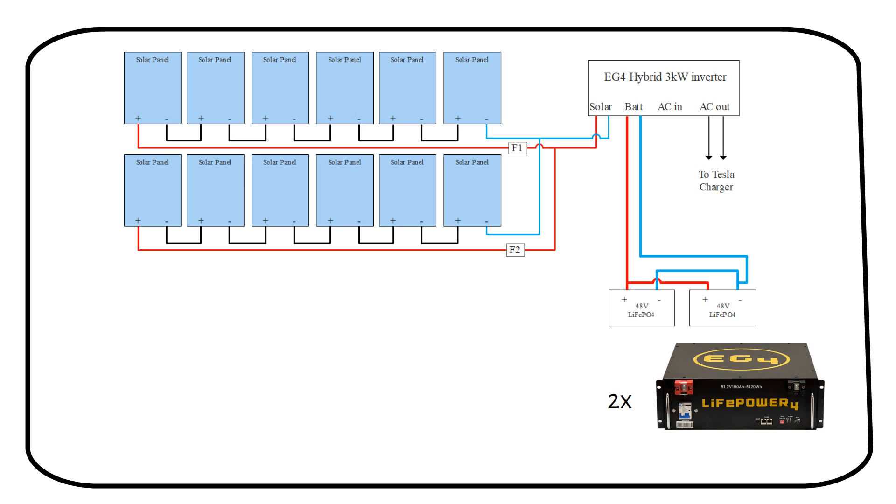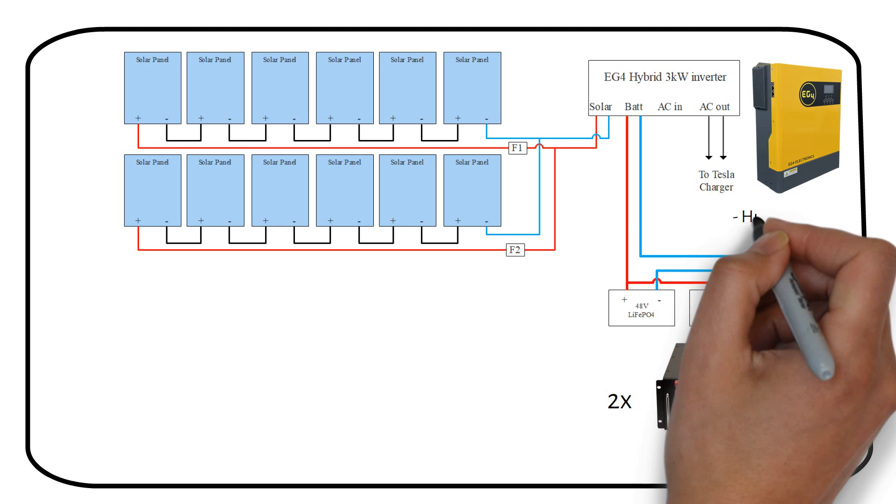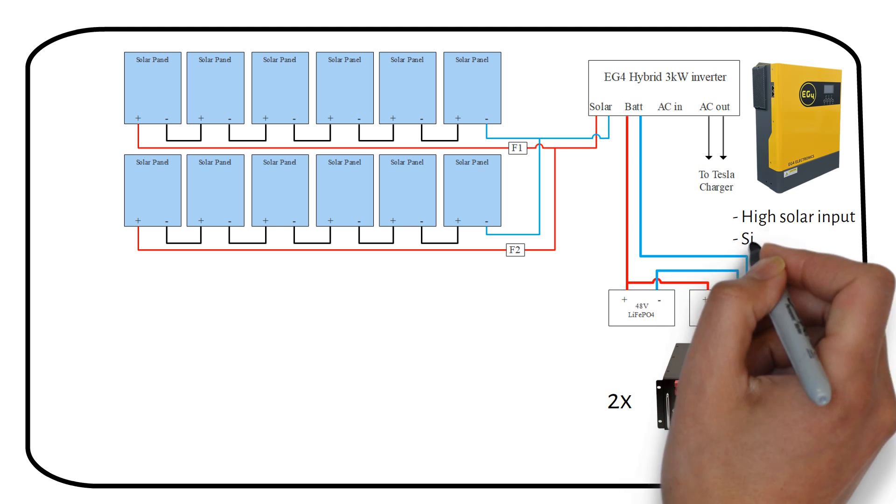Charging a Tesla requires converting the solar energy into DC power for storage and back to AC power for charging. For this, I recommend the EG4 3-kilowatt off-grid inverter. It's perfect for off-grid setups due to its high solar input voltage and simplicity as a single unit.